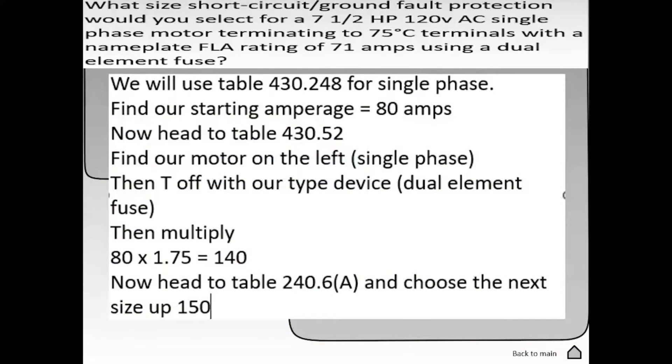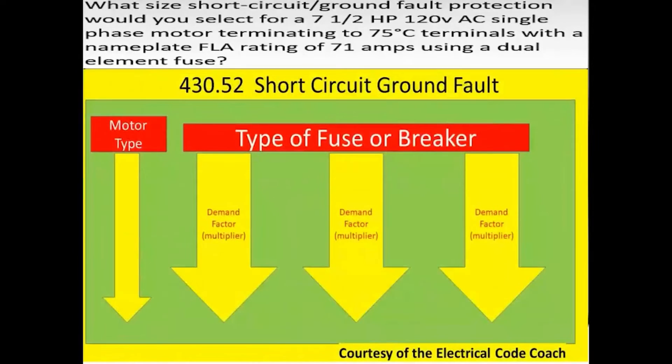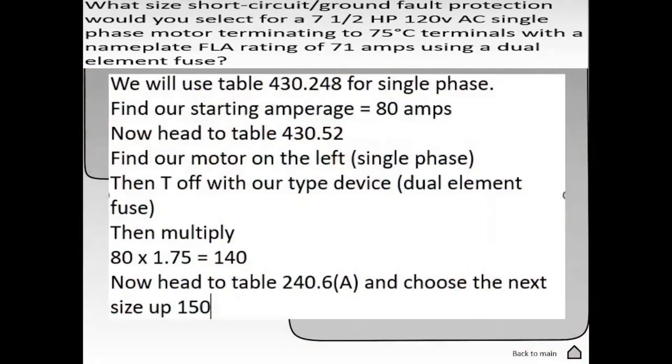Now we're going to head to table 430.52 and we're going to find our multiplier. We start over here on the left hand side and find our type of motor which is single phase, then we come across here until we find our type of device which is a dual element fuse. We find that the multiplier is 175%. Then all we have to do is do the math.